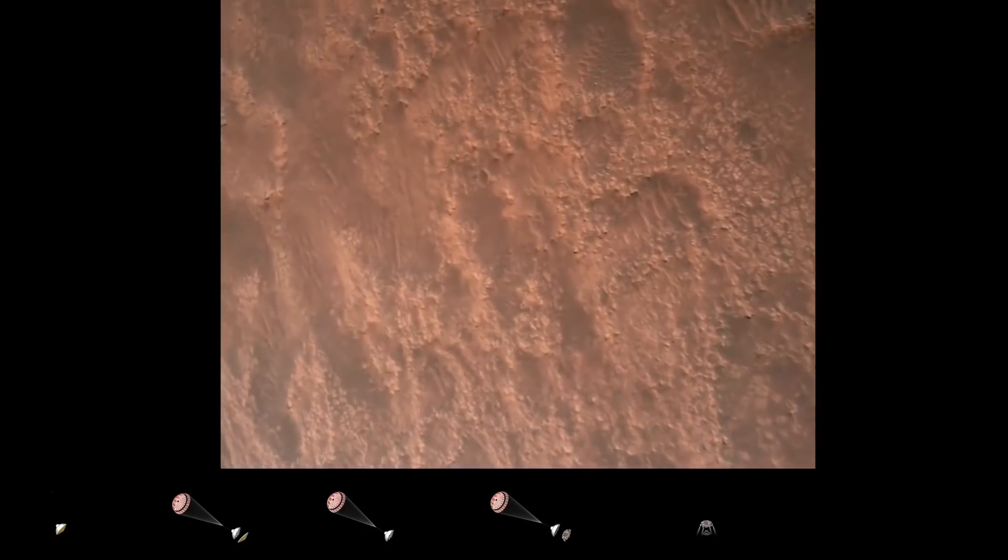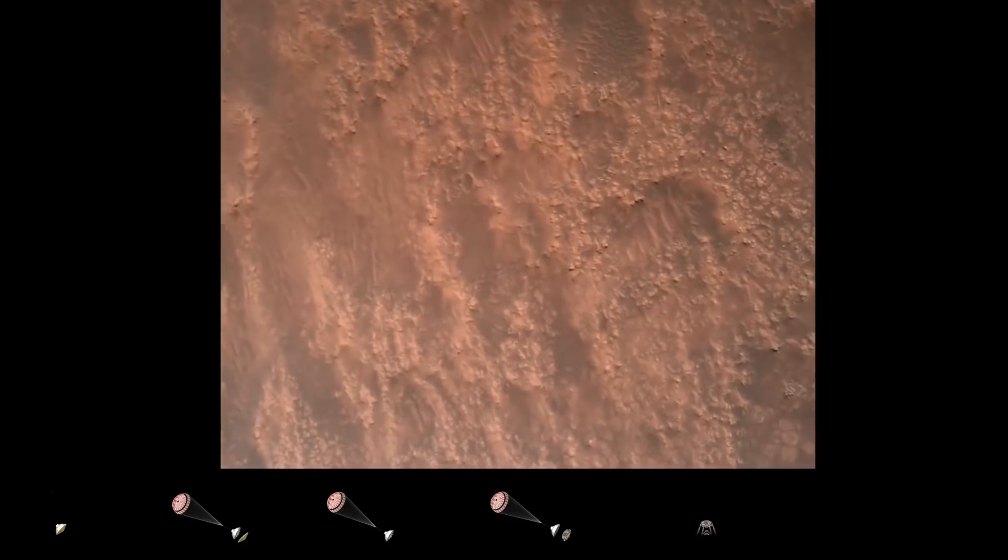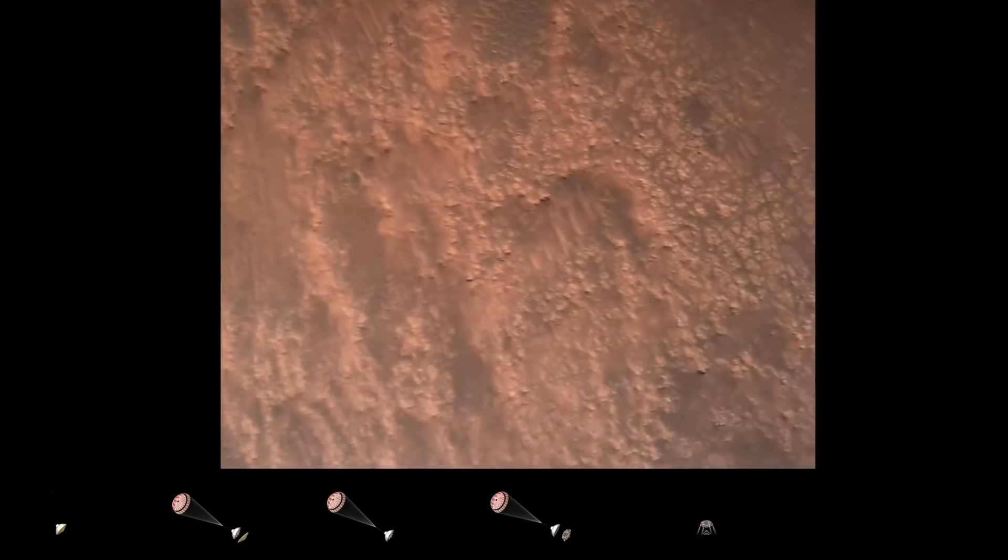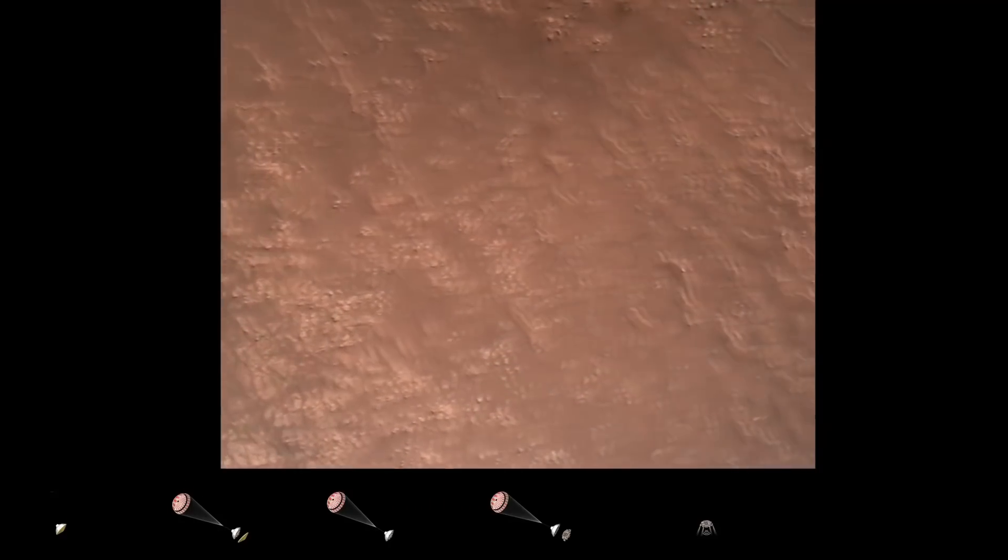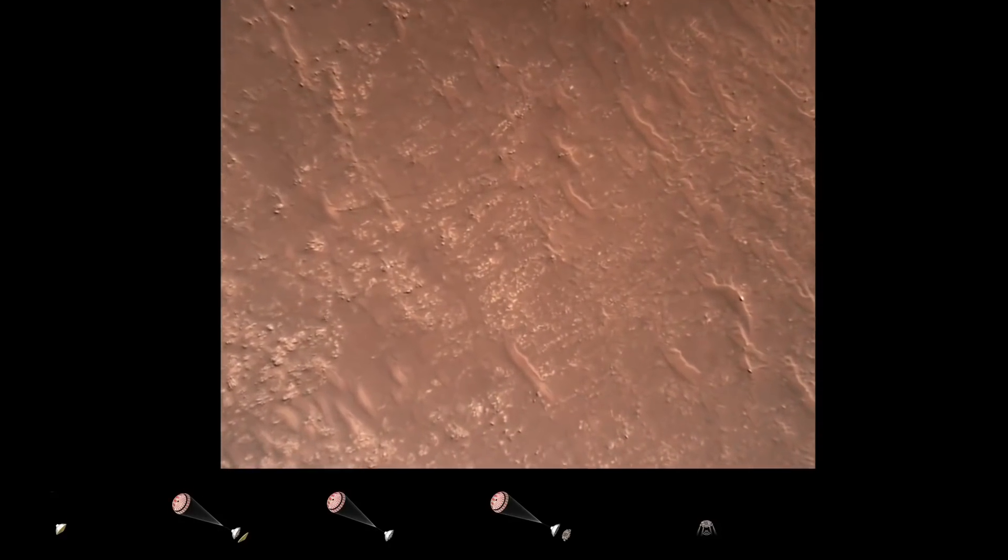TRN safety bravo. We have completed our terrain relative navigation. Current speed is about 30 meters per second, altitude of about 300 meters off the surface of Mars.